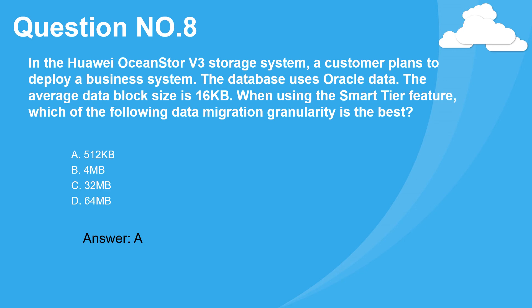Question 8. In the Huawei OceanStor V3 storage system, a customer plans to deploy a business system. The database uses Oracle, with an average data block size of 16 kilobytes. When using the SmartTier feature, which of the following data migration granularities is the best? A. 512 kilobytes. B. 4 megabytes. C. 32 megabytes. D. 64 megabytes. Answer: A.